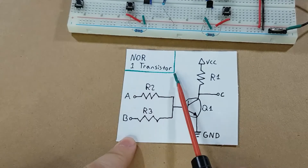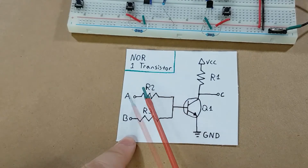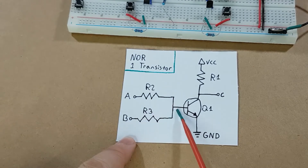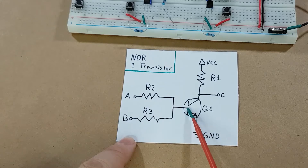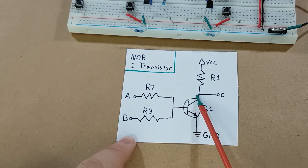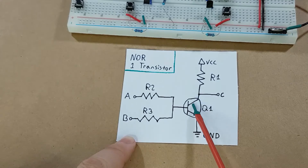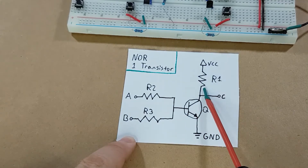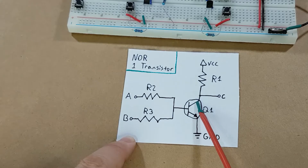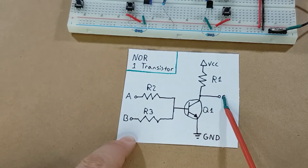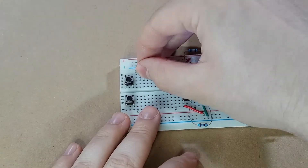We can make a one-transistor NOR gate, which is just tying inputs A and B together into the base of a single transistor. Then same process — the transistor is tied to ground, VCC comes in through a resistor into the collector of the transistor, and at that junction point we take our output.